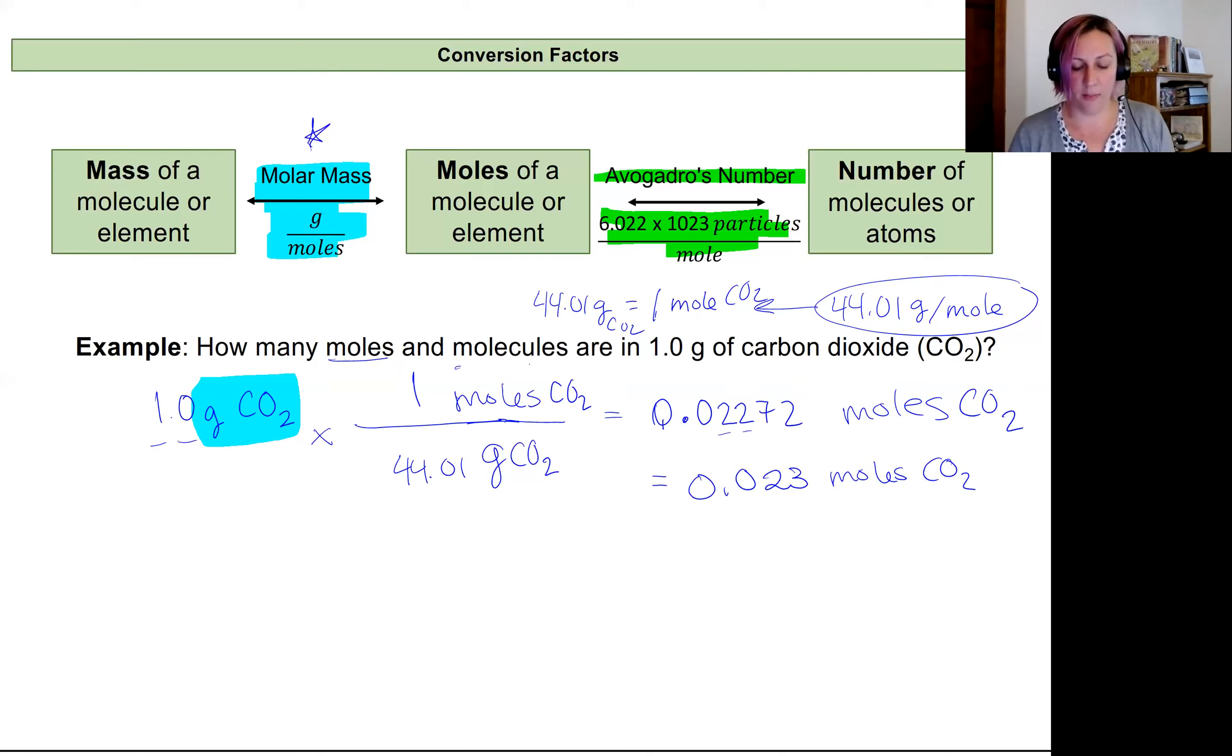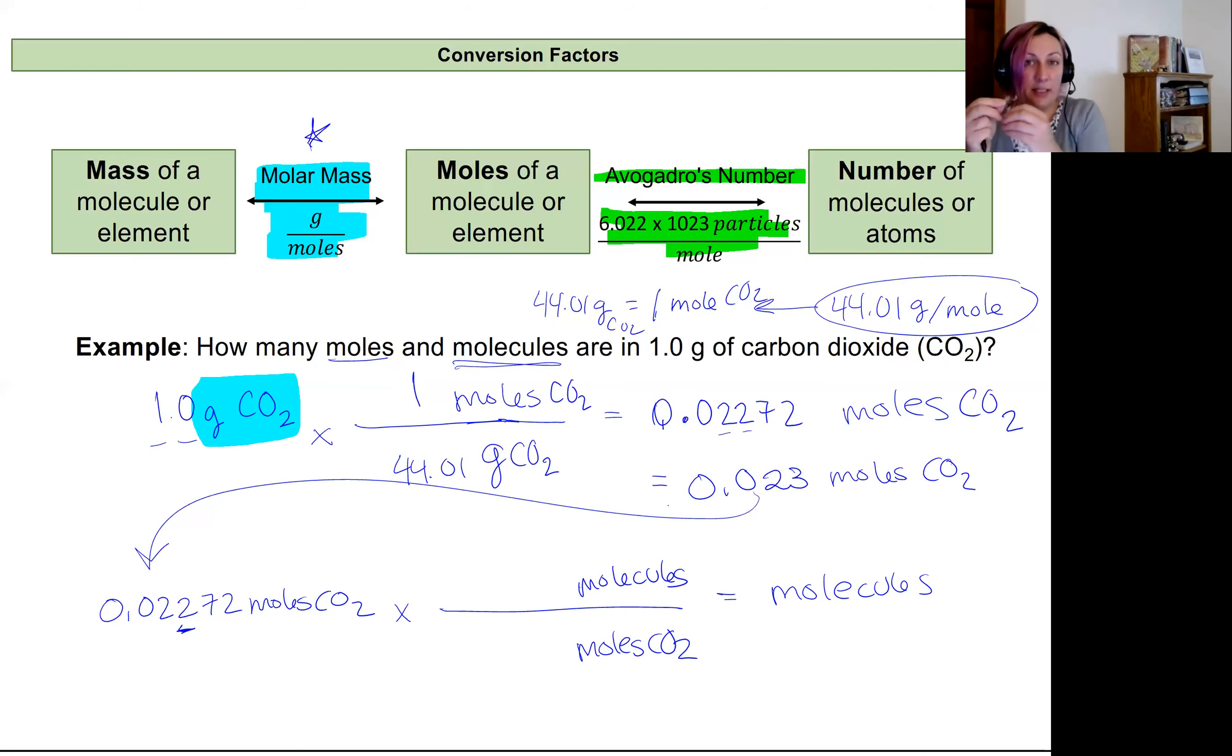All right, so that's half of this. Then what about molecules? We're going to need to figure out the number of molecules. So to figure out molecules, it would be best to be in moles. So I'm actually going to build off this number that we just calculated and make that my new starting point. So I have 0.02272 moles of CO2. And I'm going to put a line under the second significant figure to track my significant figures through this problem. And I am going to multiply that by a conversion factor that'll give me an answer that's in molecules.